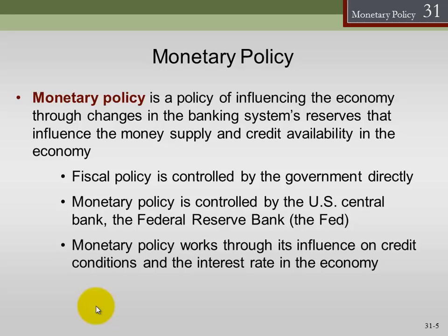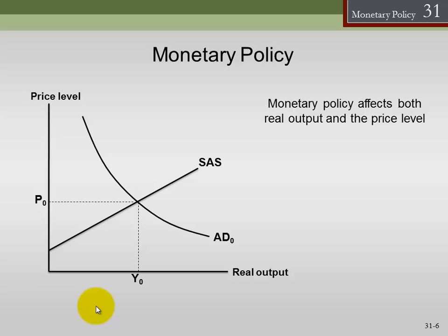So we're working through these credit markets. Looking at the aggregate supply-aggregate demand model, notice we have short-run aggregate supply. When thinking about monetary policy, we think about this in terms of the short run. Most economists agree that monetary policy does not have a lot of long-run effects — or at least not positive long-run effects. The ability to make things better is somewhat limited; the ability to make things worse is pretty well unlimited.